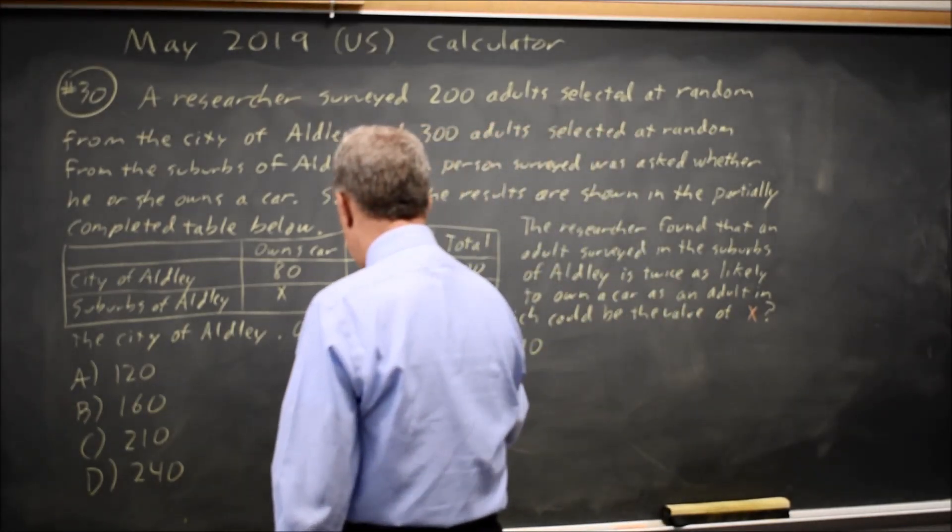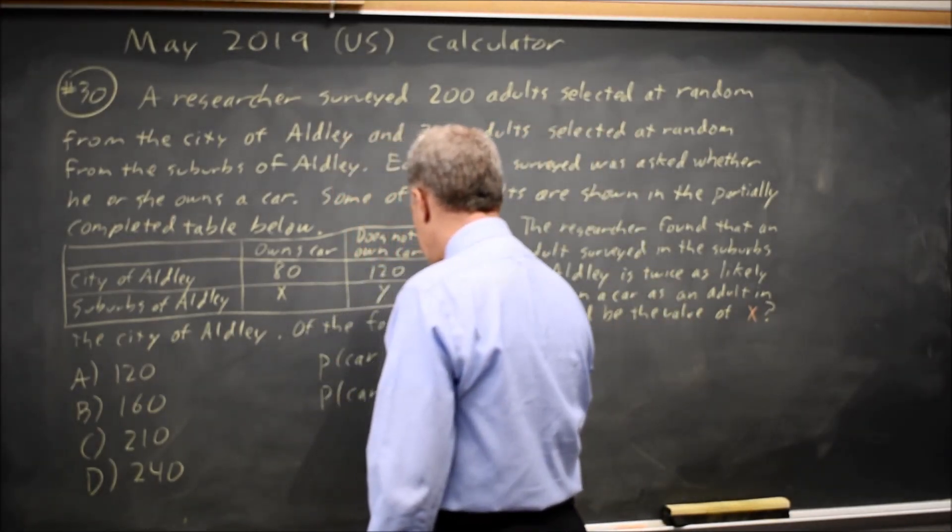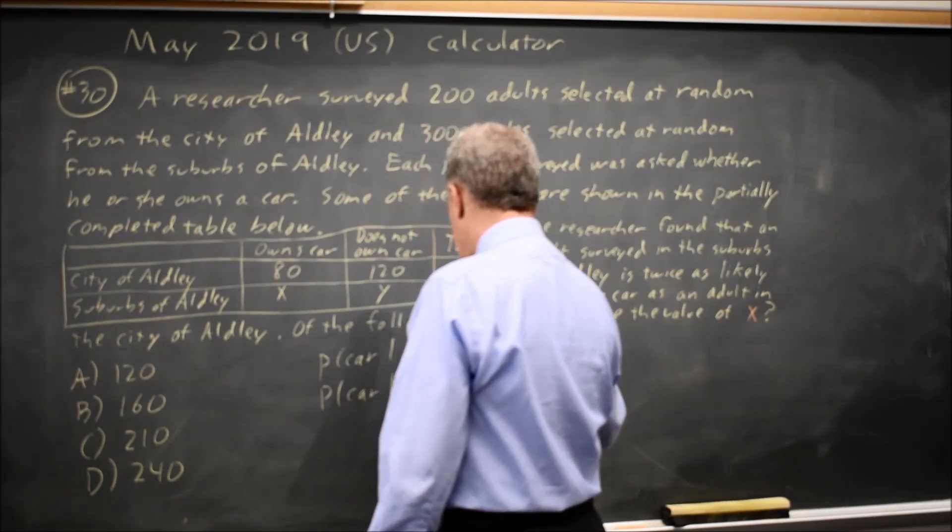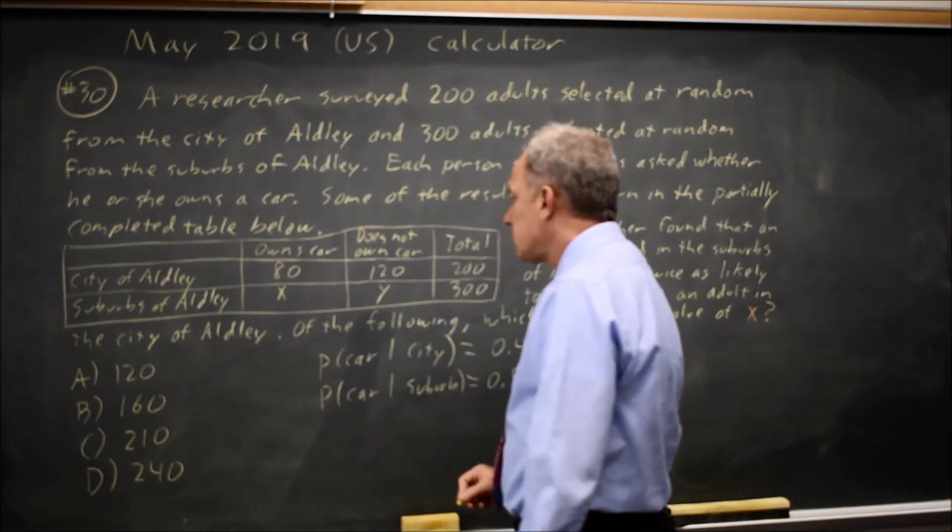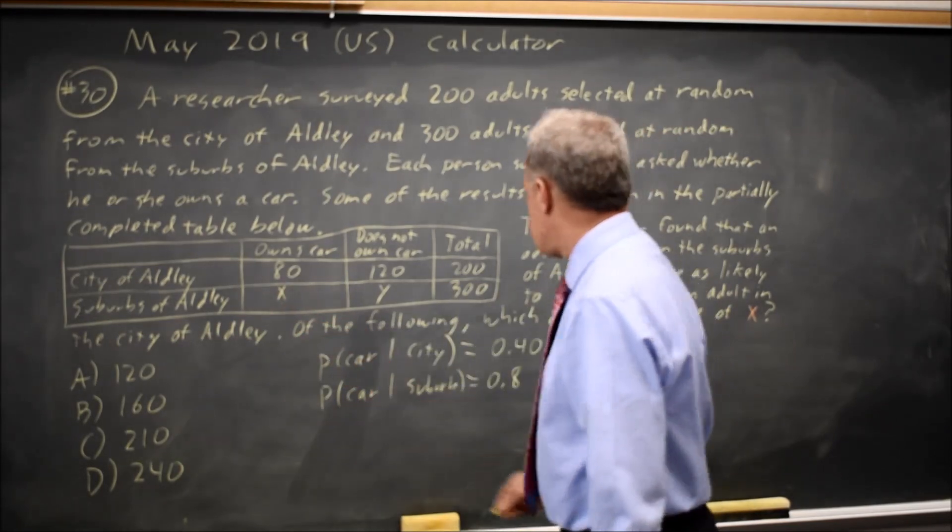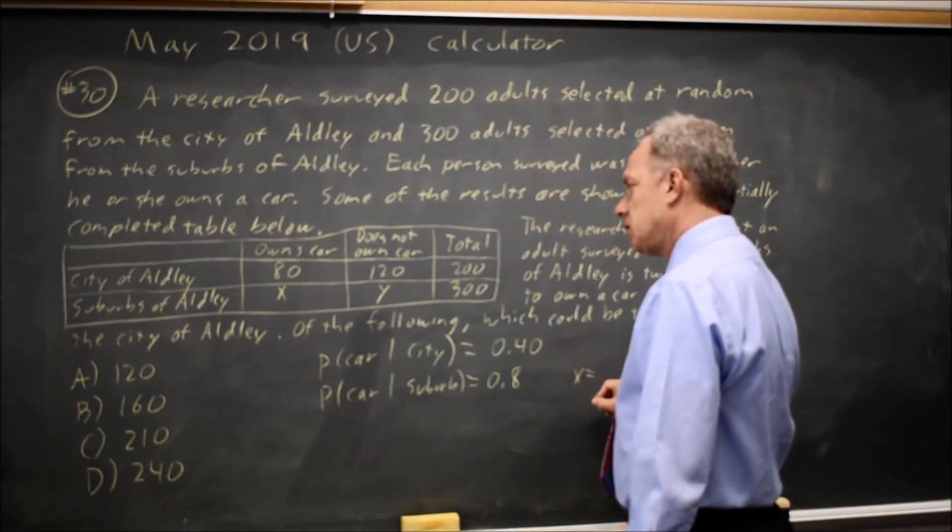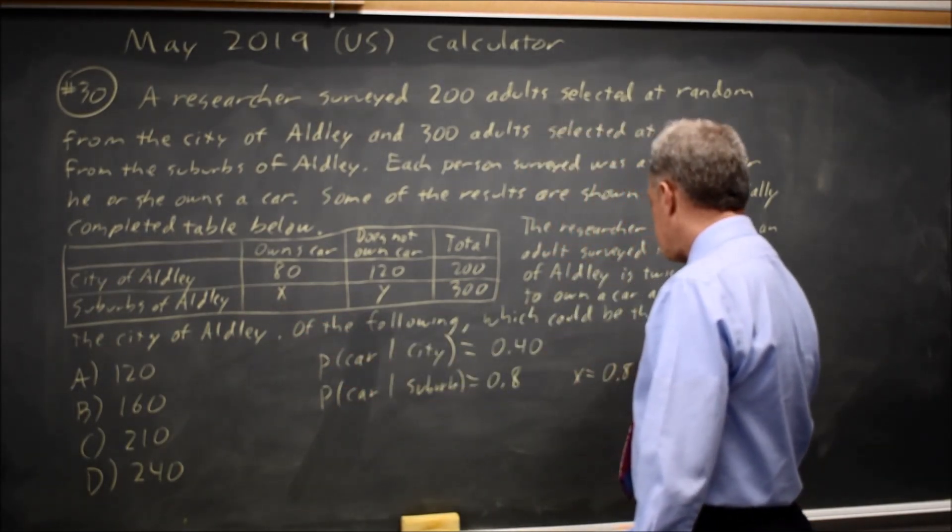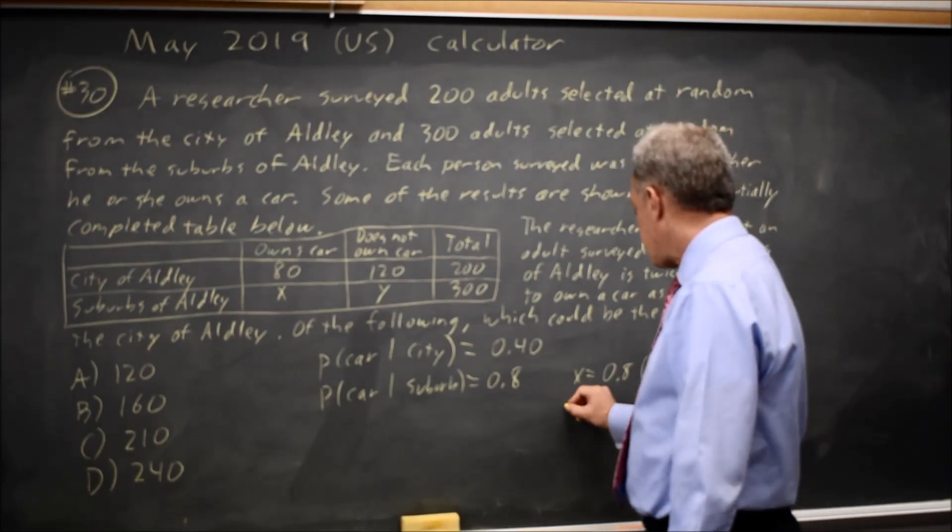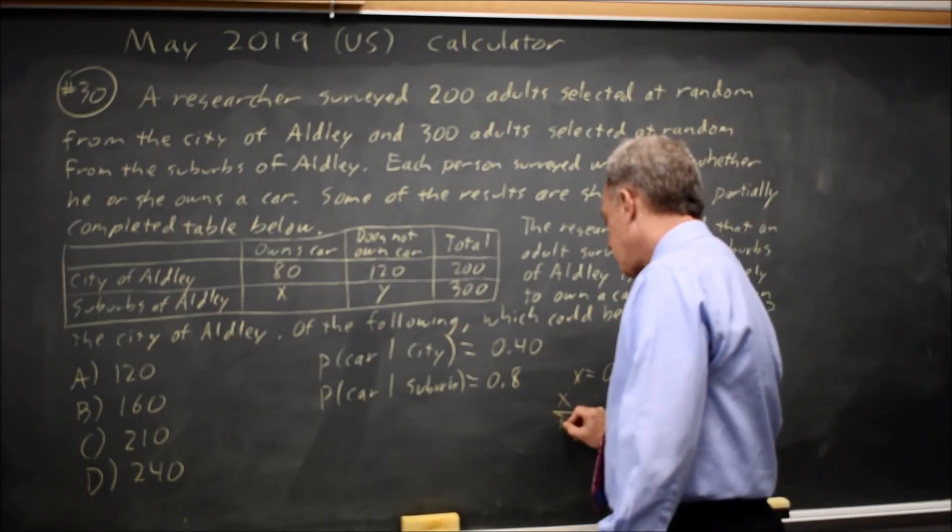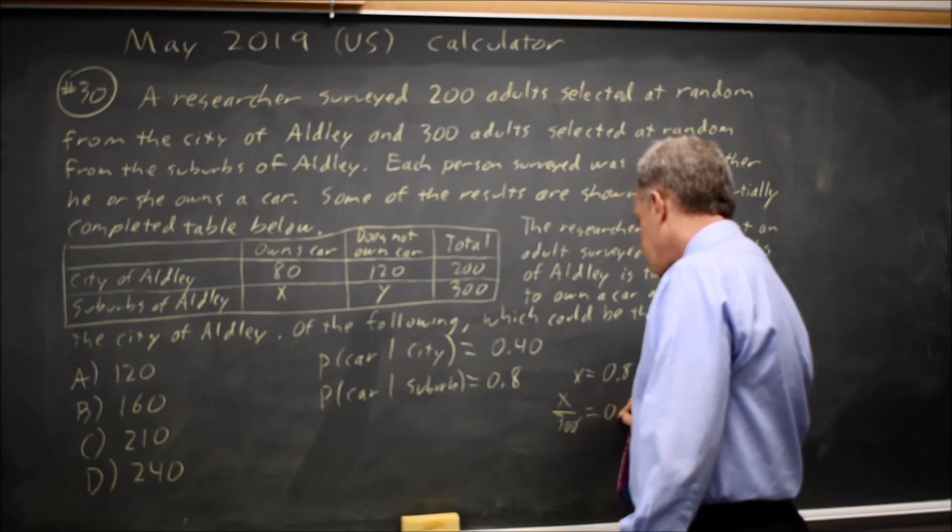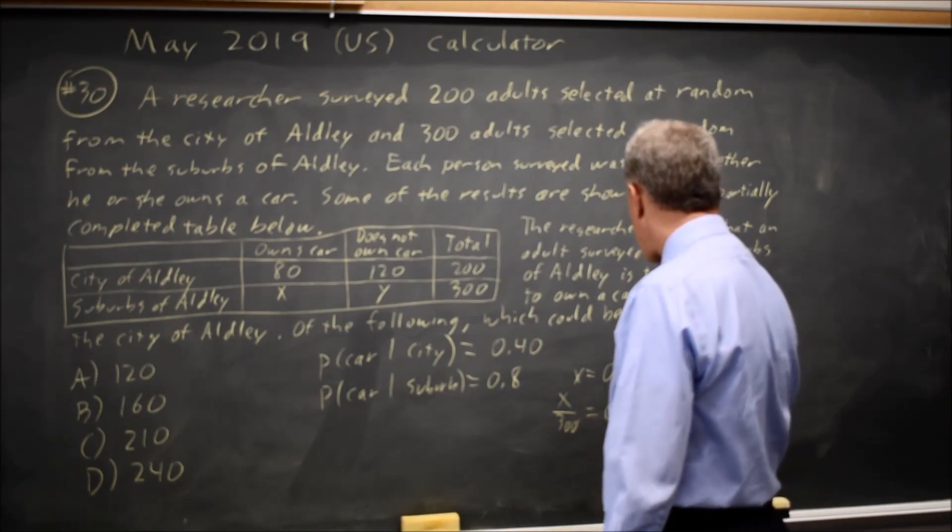the probability of a car given that you're in the suburbs is going to be 0.8. So x equals 0.8 times 300, or you could look at it as x over 300 equals 0.8, and then multiply both sides by 300.